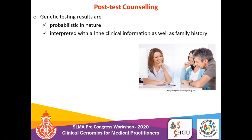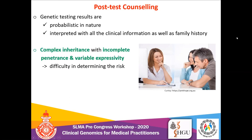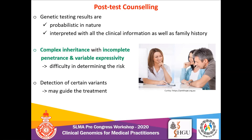Identification of at-risk family members is important because in cardiac disorders the first presentation may be sudden death, so prevention is critical. Identification of a molecular cause — a particular mutation in a particular gene — may help in initiating gene-specific cardiac or extra-cardiac management recommendations. Post-test counseling plays an important role and should combine clinical information, family history, and genetic testing results. Challenges include complex inheritance, incomplete penetrance, and variable expressivity. Detection of certain variants may guide treatment and lifestyle modifications for at-risk family members.